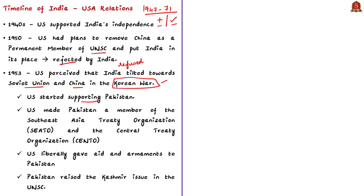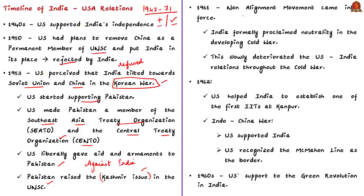The United States made Pakistan a member of SEATO (Southeast Asia Treaty Organization) and also CENTO (Central Treaty Organization), and liberally gave aid and armaments to Pakistan, which Pakistan used against India in subsequent wars. It was also with US support that Pakistan could raise the Kashmir issue at the United Nations Security Council. Next, in 1961, the Non-Alignment Movement came into force, by which India formally proclaimed neutrality in the developing Cold War between the US and Russia, which slowly damaged US-India relations throughout the Cold War.